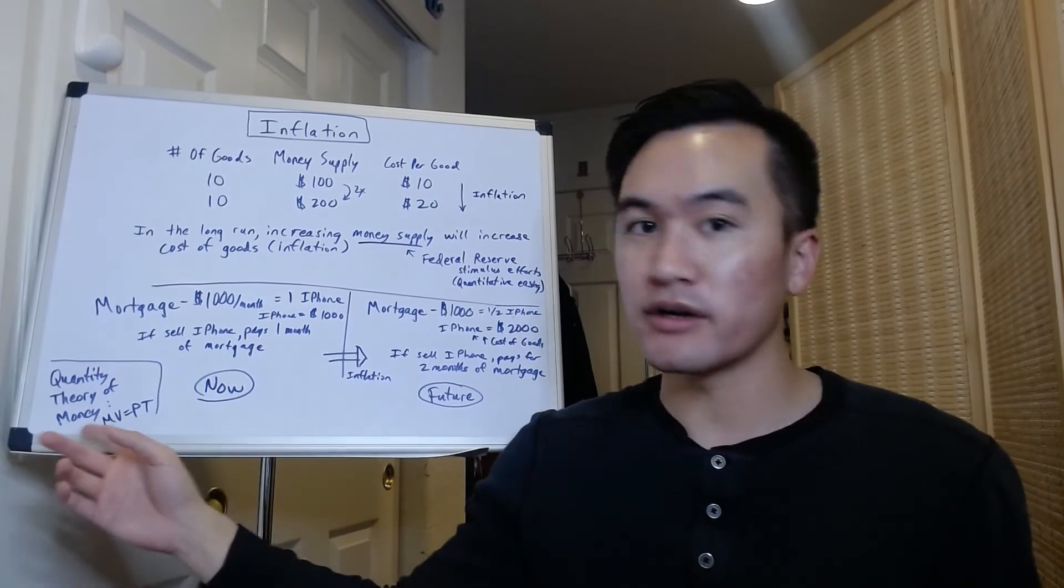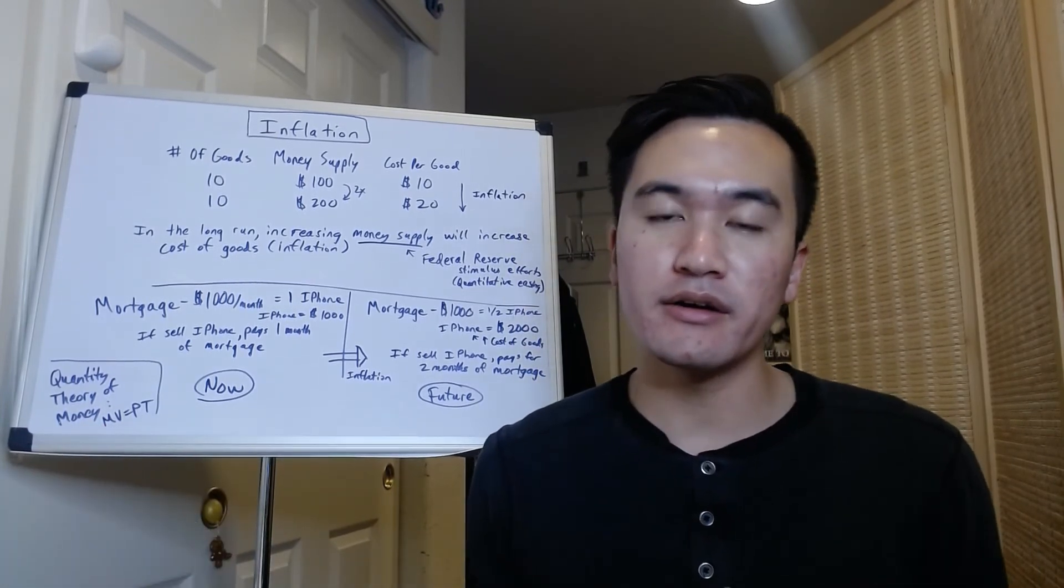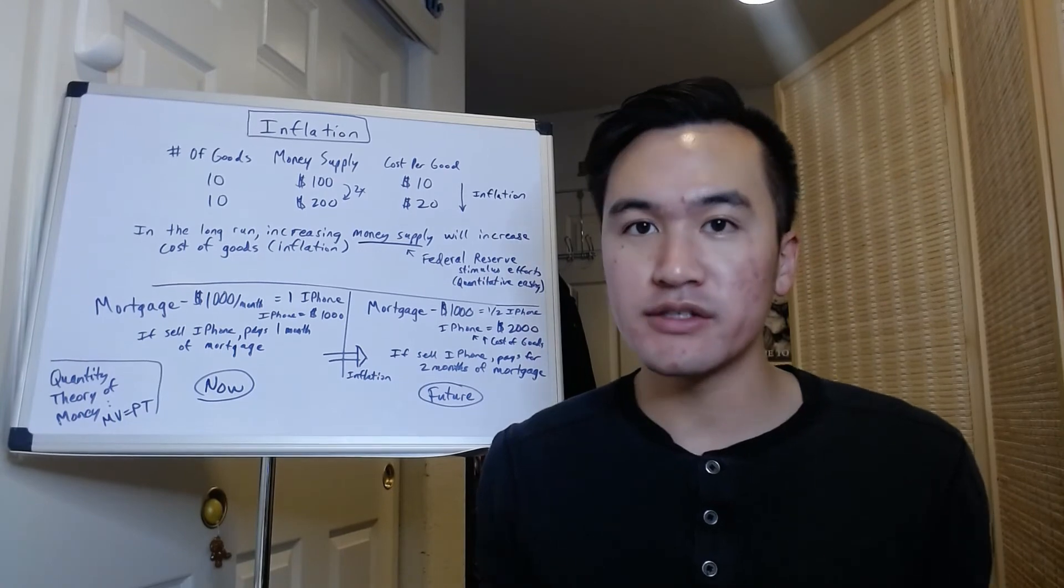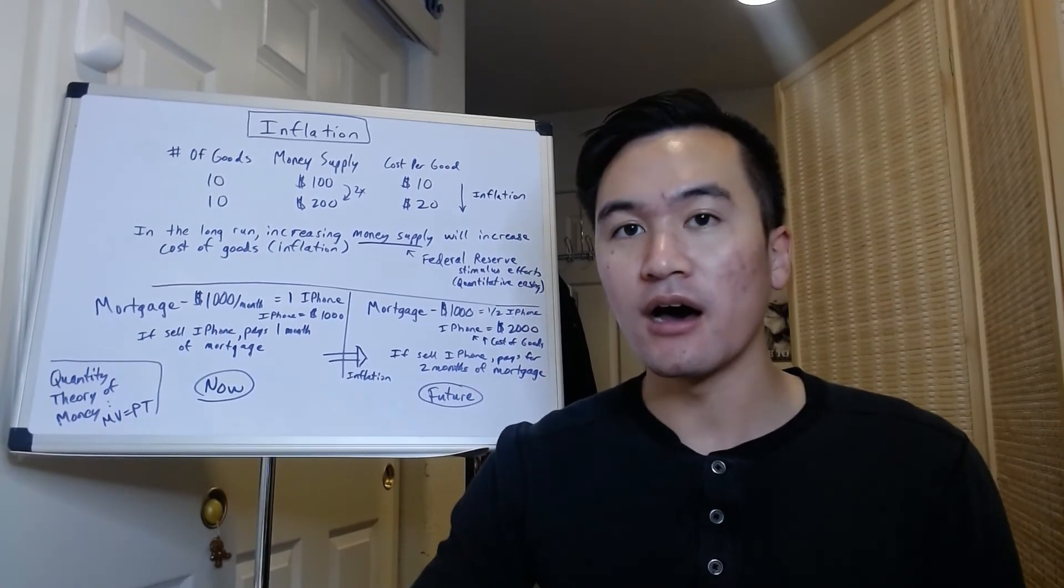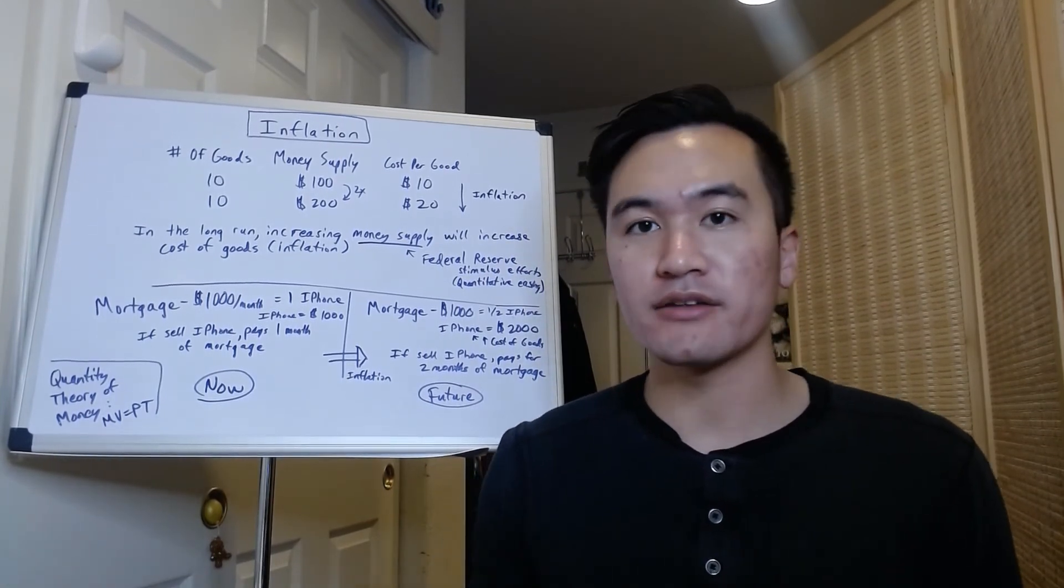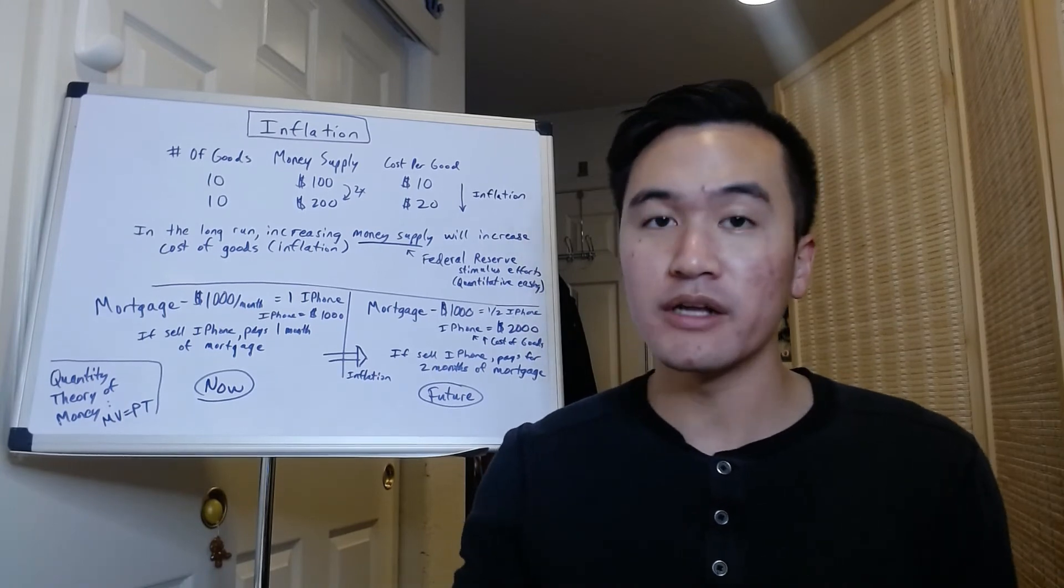The last thing I want to talk about on this video is this part here in the corner. It's called the quantity theory of money. For those who are interested in inflation and how money supply affects the whole economy in the short run, you can google that term.